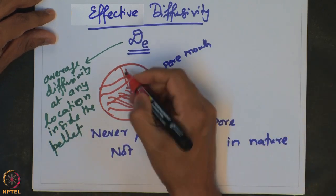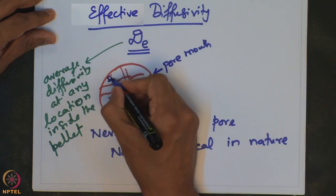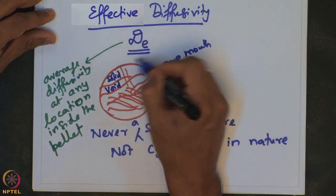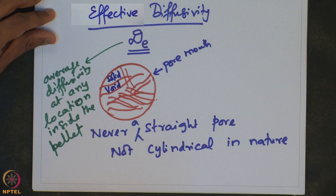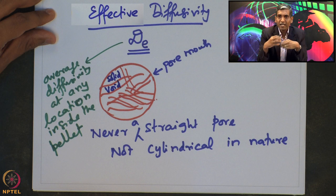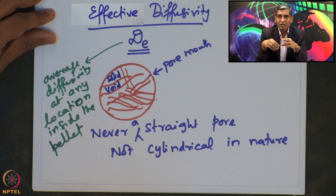It is rather convenient to define what is called an effective diffusivity, which essentially quantifies the average diffusivity at any location inside the pellet. Note that there will be solid regions inside the pellet and there will be voids inside the pellet. The effective diffusivity essentially takes into account all the voids, solids, and everything that is present inside, and defines an average diffusivity which is basically valid everywhere inside the catalyst pellet. The flux defined for transport from the surface of the pellet to the inside of the catalyst would take into account the area through which the species is moving, which includes both the voids and the solids. So the effective diffusivity takes care of the presence of voids and solids.